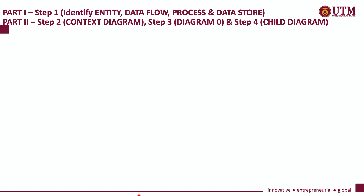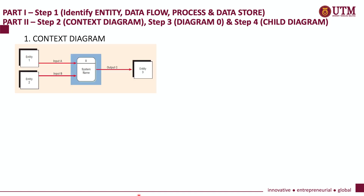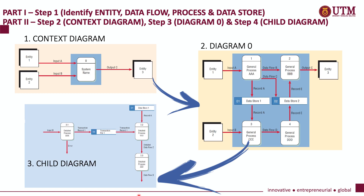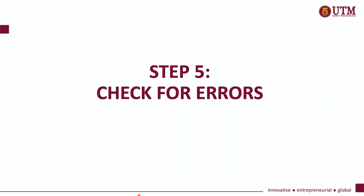Our expectation is that before you watch this video, you would already know how to create a context diagram and explode it into diagram 0, and then explode it further into a child diagram. If you still do not understand these processes, please go and watch video 1 and video 2 or contact your lecturer. Video 3 will show us step 5 of creating a data flow diagram: check for errors.